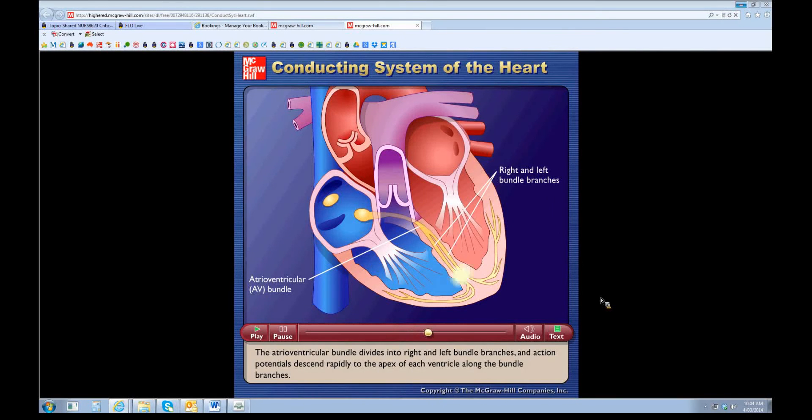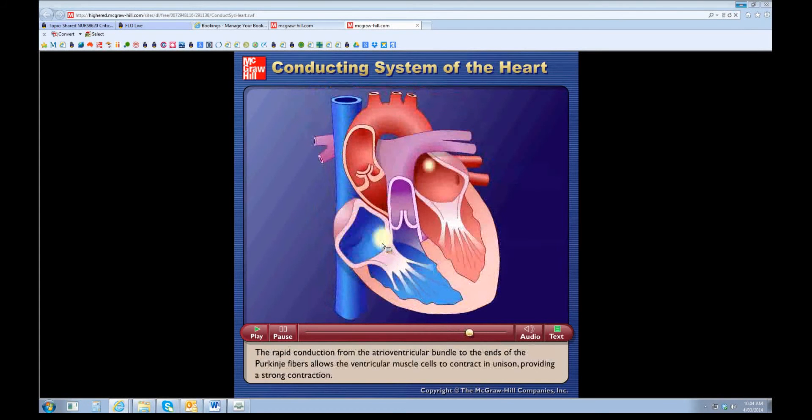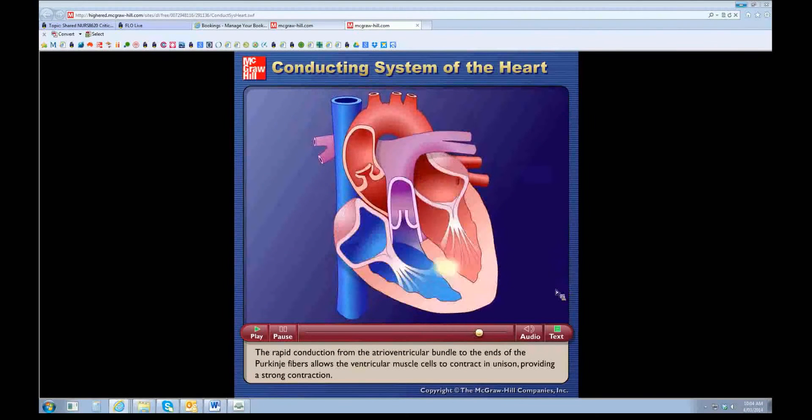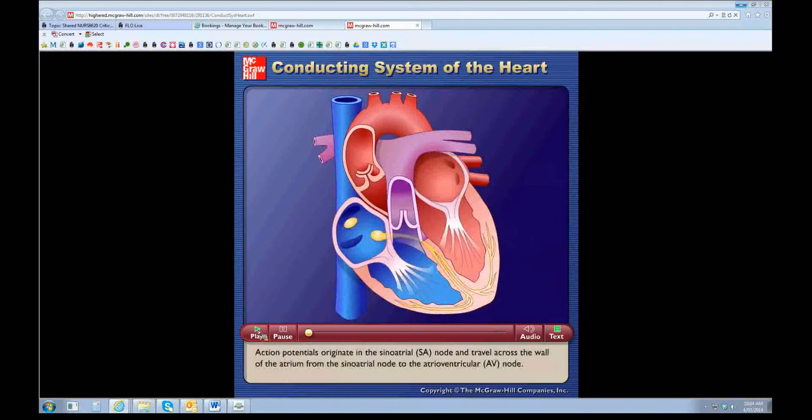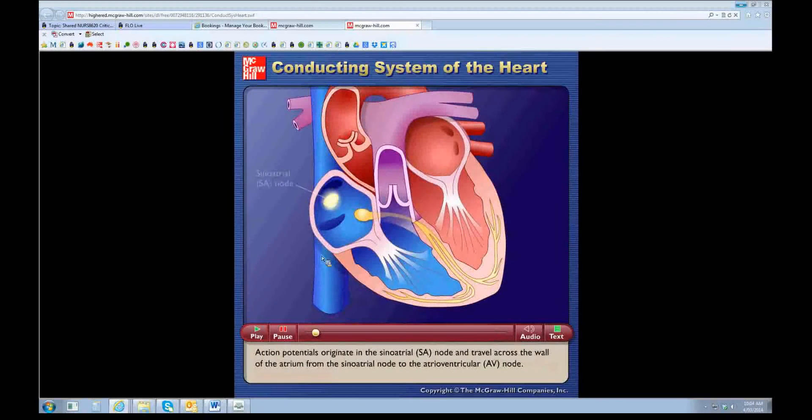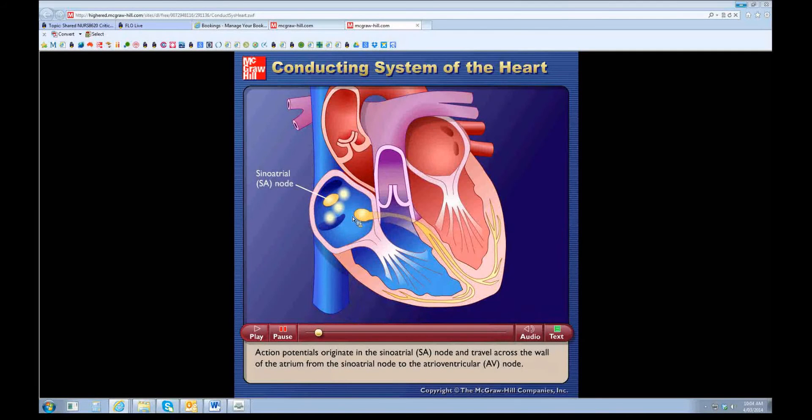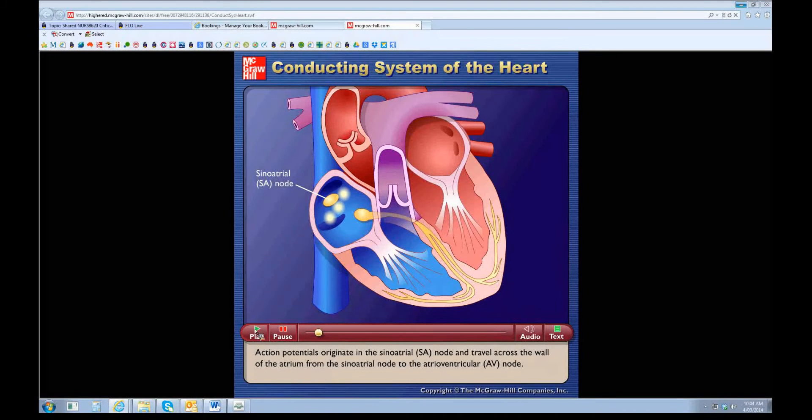We have conductance along it, and of course we have the sinoatrial node which is up at the top there in the atrium, and then we have the AV node. That's the conduction system. So I'll start play again. You have your SA node and you have the conduction from that to the AV node.